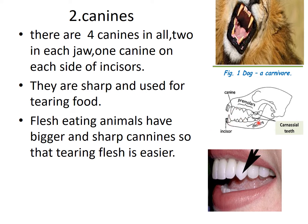If you see the teeth of a dog, it has a bigger and sharper canine. The lion also has big and sharp canine teeth, as you can see in this picture.